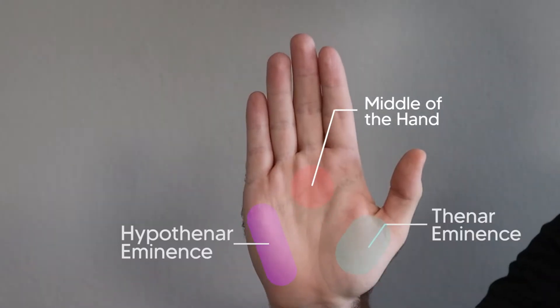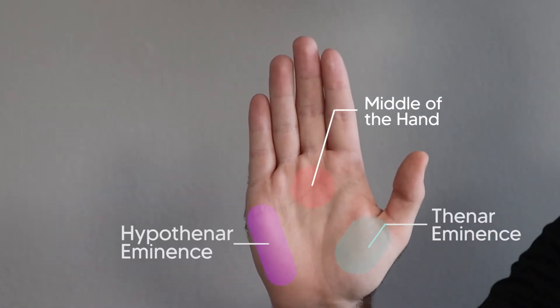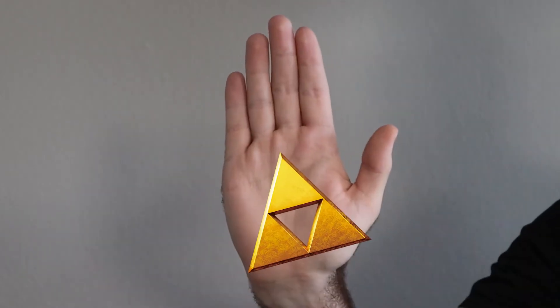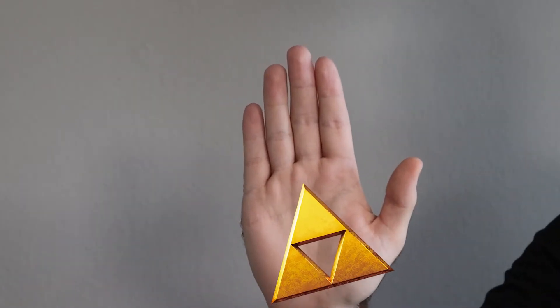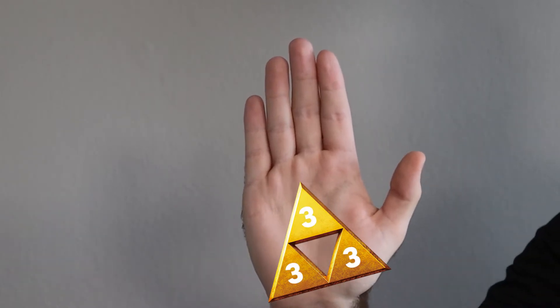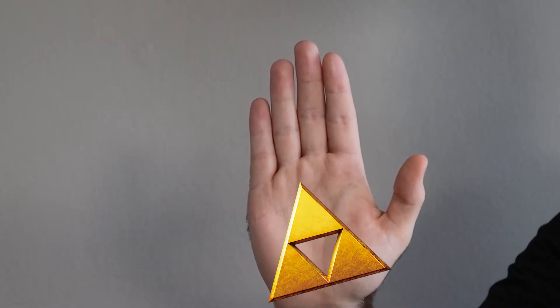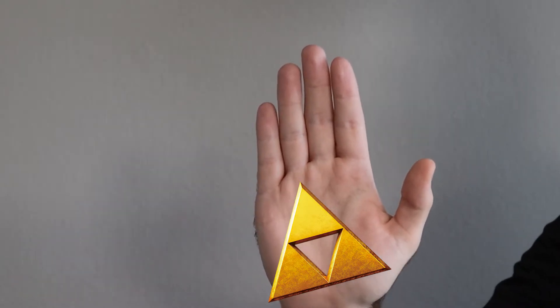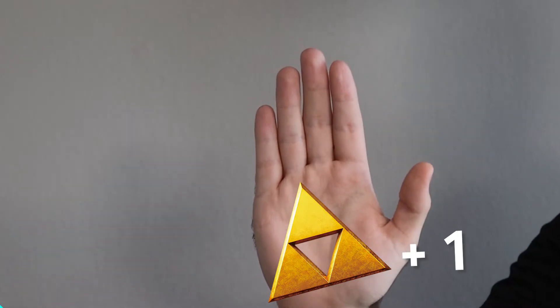Now each of these three areas actually has three different muscles or muscle groups in them. An easy way to remember this, if you're a Nintendo fan, is just to imagine you slapping a triforce right in the middle of your palm. That'll remind you of the three different areas and the three muscles you'll find in each area. Now there is one extra muscle that doesn't technically fit into any of these compartments, so really we can think about it as a triforce plus one, but we'll cover that later.